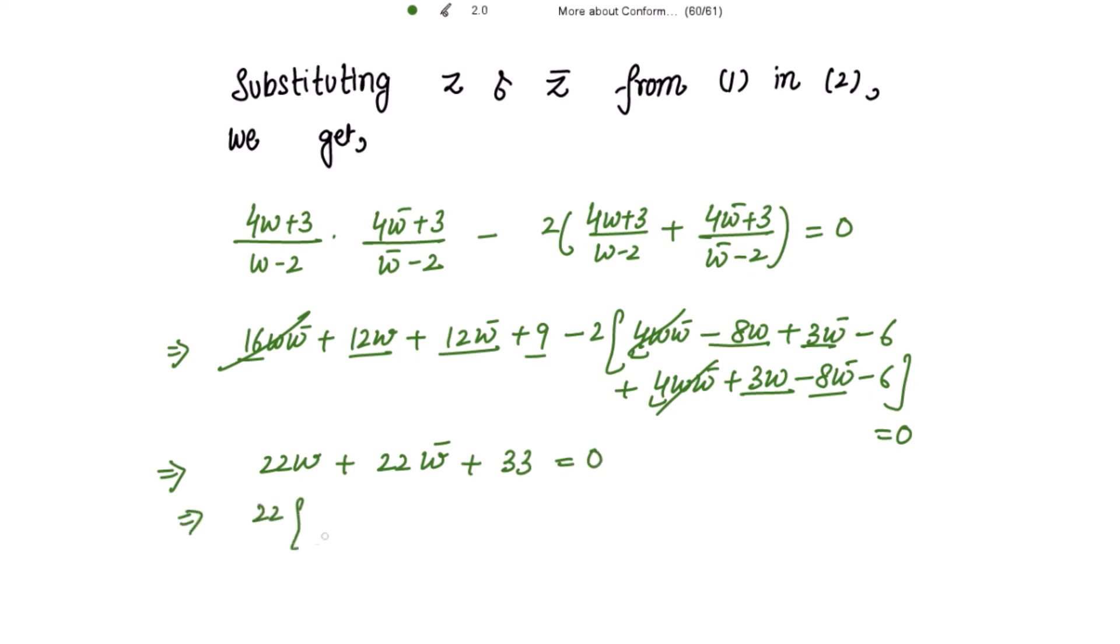So this implies, taking 22 common, we get w plus w̄ plus 33 equals 0. Because w is u plus iv and w̄ is u minus iv, if I add these two I get twice u. So here we get 44u plus 33 equals 0.